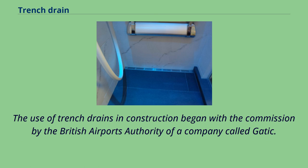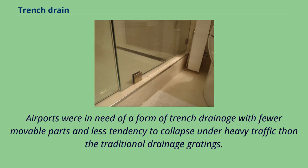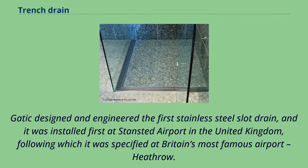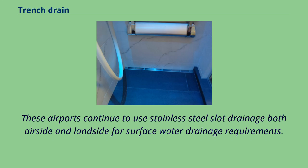The use of trench drains in construction began with a commission by the British Airports Authority of a company called Gattach. Airports were in need of a form of trench drainage with fewer movable parts and less tendency to collapse under heavy traffic than traditional drainage gratings. Gattach designed and engineered the first stainless steel slot drain, which was installed first at Stansted Airport in the United Kingdom, following which it was specified at Heathrow. These airports continue to use stainless steel slot drainage both airside and landside for surface water drainage requirements.